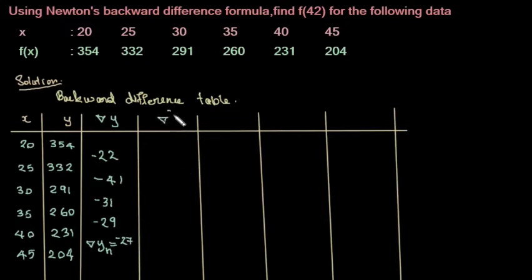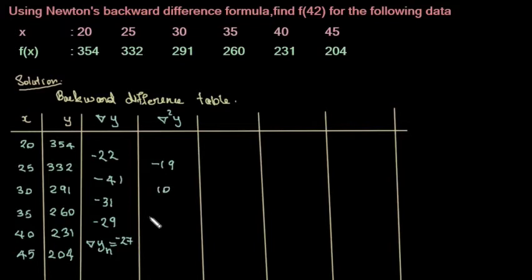Next, ∇²y. Minus 41 minus minus 22 is minus 19. Here the value is 10. And here I represent ∇²yₙ equal to 2. The answer is 2.